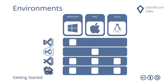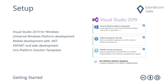Getting started developing using the Uno Platform: Uno Platform can be developed on Windows, Mac, and Linux. Supported environments include Visual Studio 2019 on Windows for Universal Windows Platform, WebAssembly, iOS, macOS, Android, and Linux; Visual Studio for Mac; Visual Studio Code on Windows, Mac, and Linux for WebAssembly projects; and JetBrains Rider on Windows, Mac, and Linux. To set up on Windows, install Visual Studio 2019 with the Universal Windows Platform development, mobile development with .NET, and ASP.NET and web development workloads, then install the Uno Platform Solution Templates Visual Studio extension from the Visual Studio Marketplace.